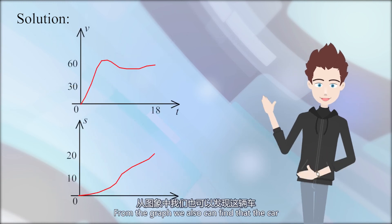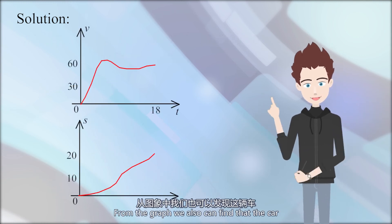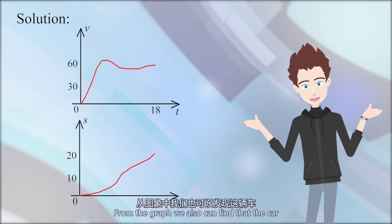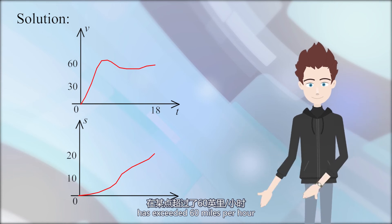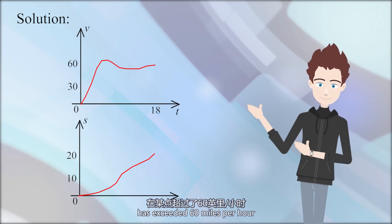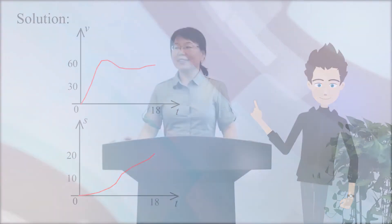From the graph, we can also find that the car has exceeded 60 miles per hour. Good job, Jack. Thank you. So we say the car must have exceeded the 60 miles per hour speed limit.